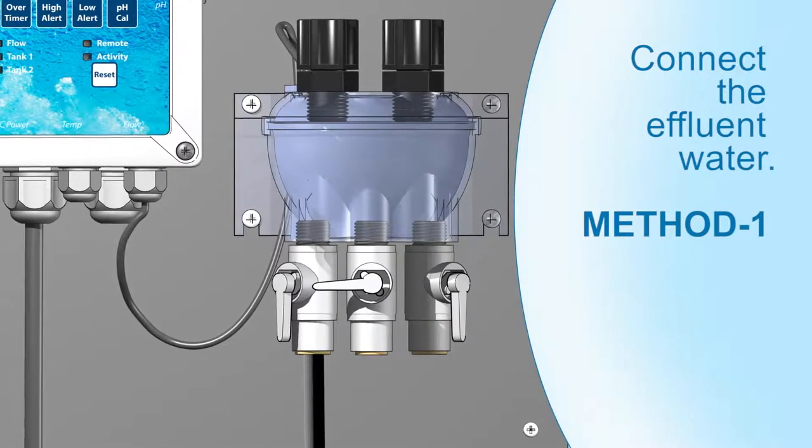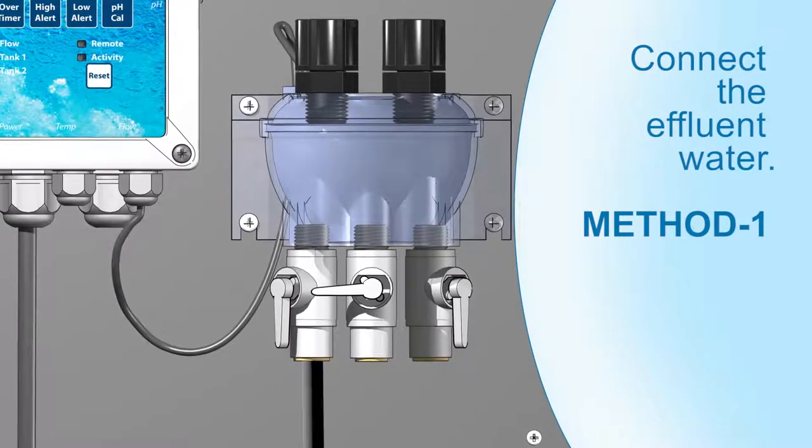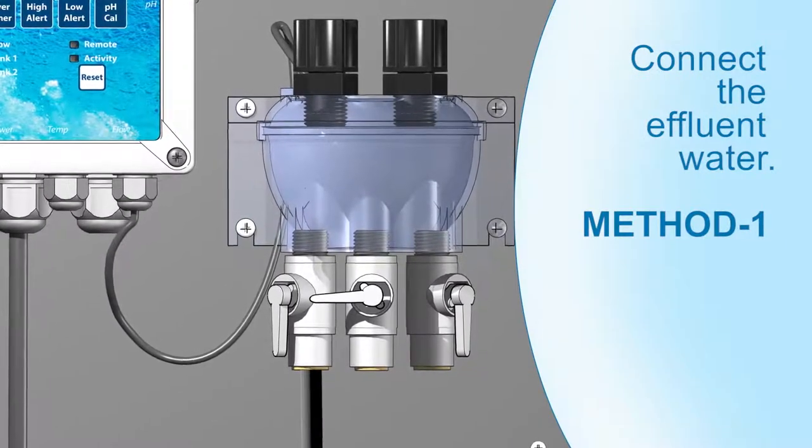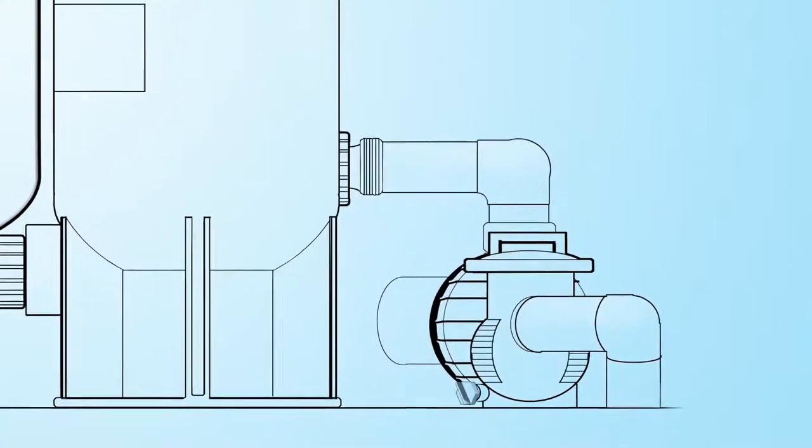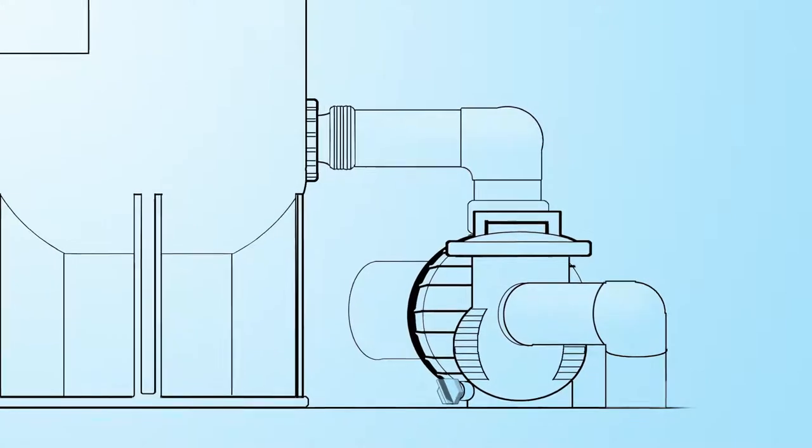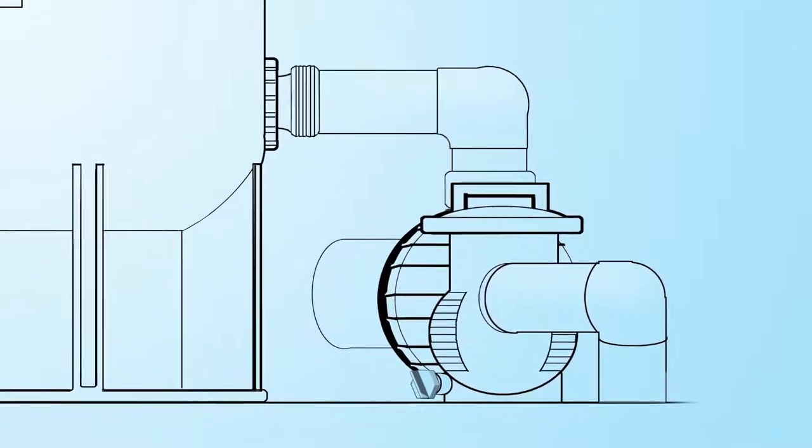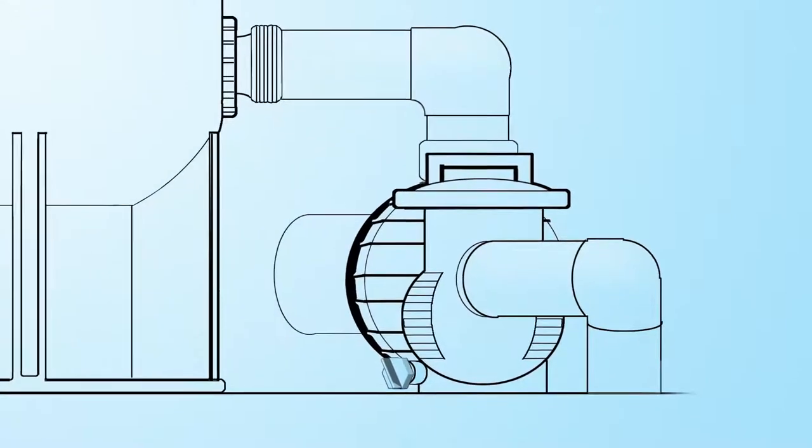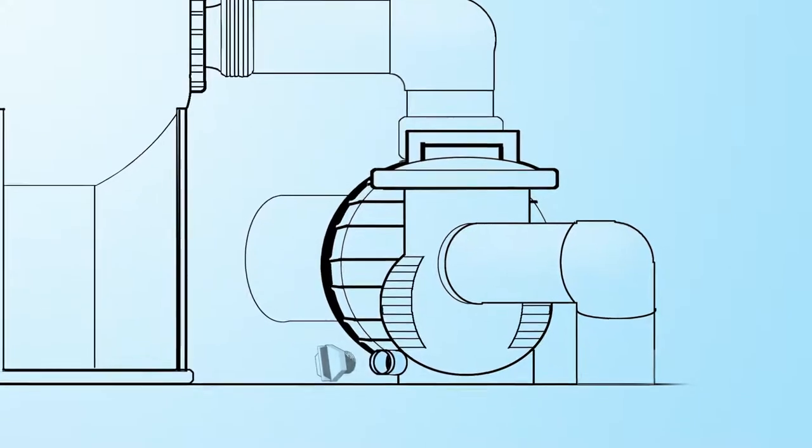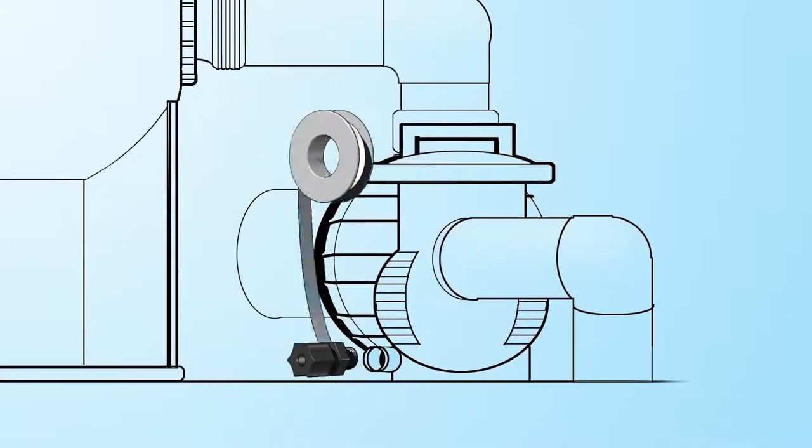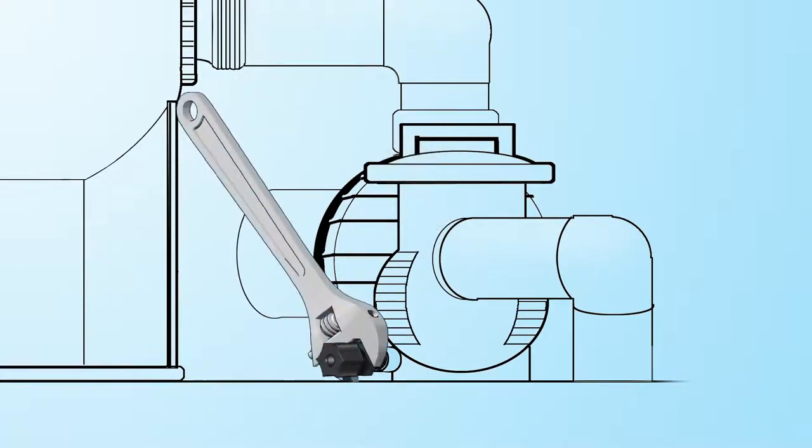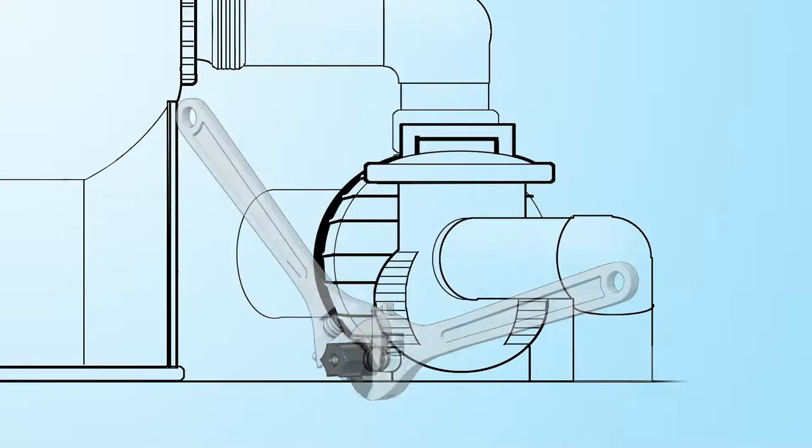There are two methods of installation into the right hand or effluent valve on the flow cell. Method one is to install the additional compression fitting into the drain plug at the bottom of a pool pump basket. Remove the drain plug and securely tighten the fitting into the hole to prevent suction leakage. Be sure you do not over-tighten the fitting.